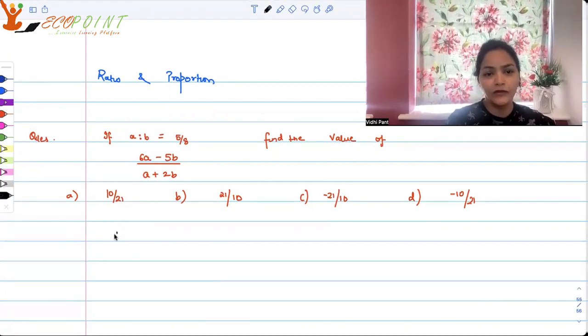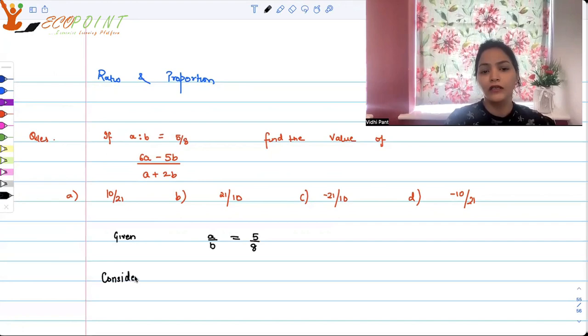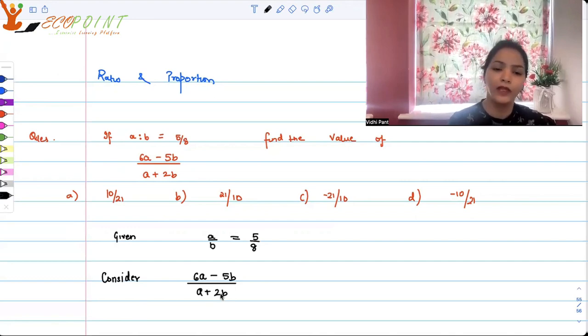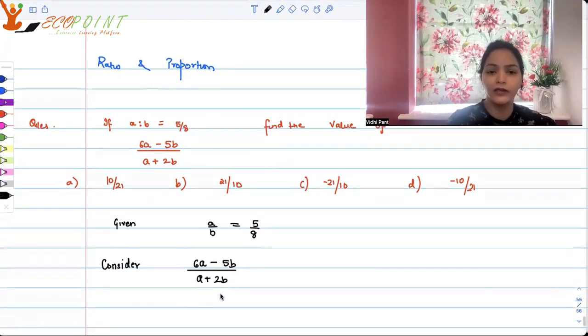Let's start this problem. What is given to us is a is to b is 5 by 8. That means a upon b is 5 by 8, right? Now what we have to find out is something associated to 6a minus 5b, the value of 6a minus 5b upon a plus 2b, right? And we're going to use the given thing that a by b is 5 by 8. So how can we do it?